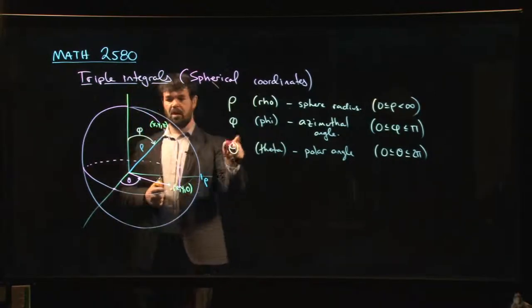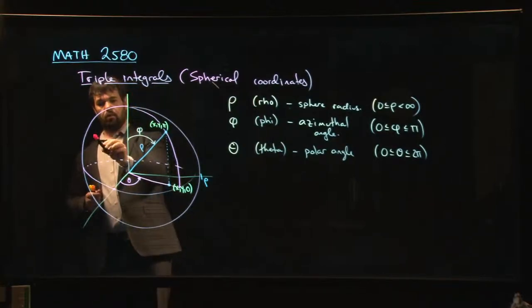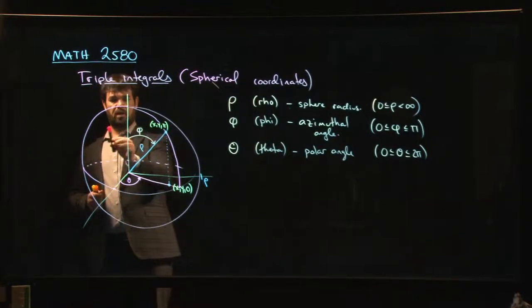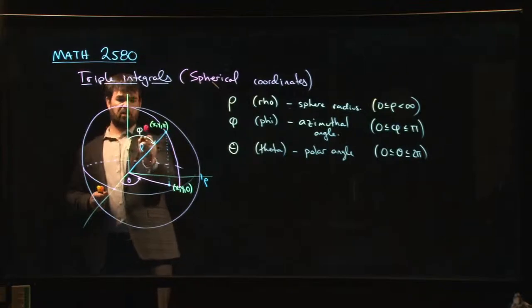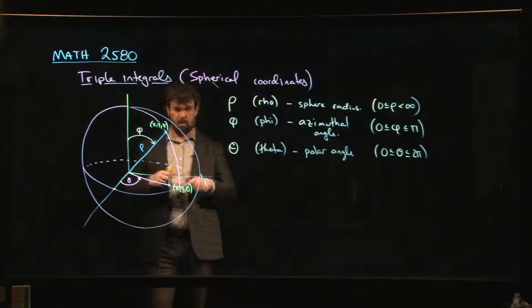If you set phi equal to a constant, constant phi, well, then you can revolve this around. You can let theta vary, and as you revolve it around, you'll notice that when you set phi equal to a constant, what you get is a cone.